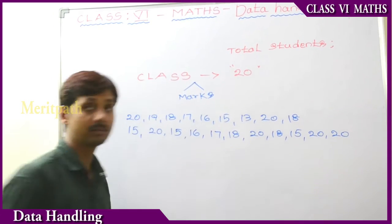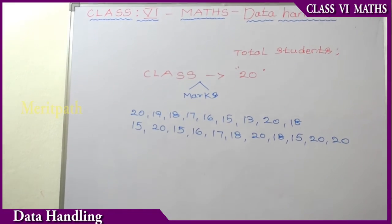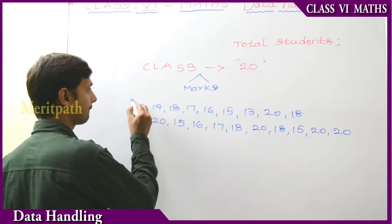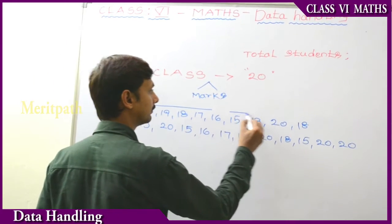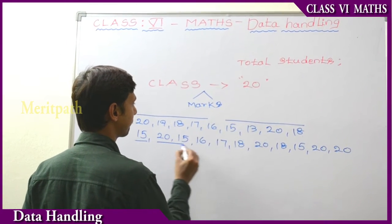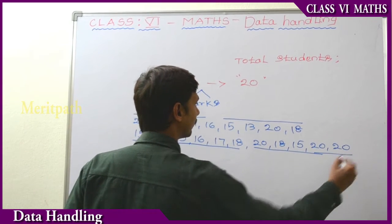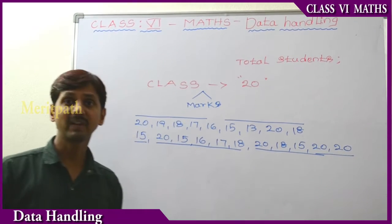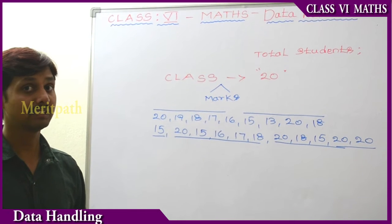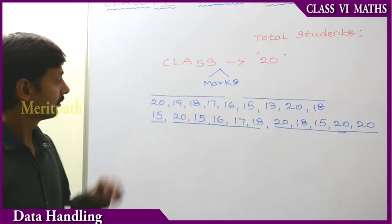These are the students — total number of students. The marks of 20 students: we have conducted a test, and then the marks are as follows.